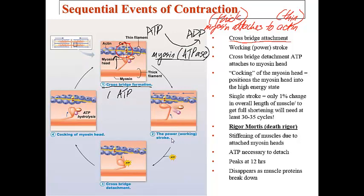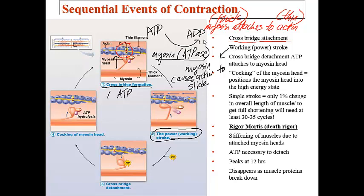The power stroke, also called the working stroke, then occurs: the myosin causes the actin to slide toward the H zone, shortening the muscle. After the power stroke, myosin detaches — step three — and this requires another ATP. So one full crossbridge cycle requires two ATPs total. This is ATP hydrolysis — hydrolysis being the use of water to break a bond.